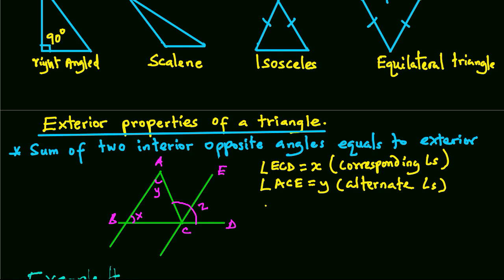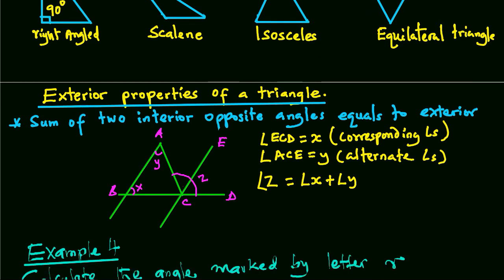Therefore, angle Z equals angle X plus angle Y. So the sum of two interior opposite angles equals the exterior angle.